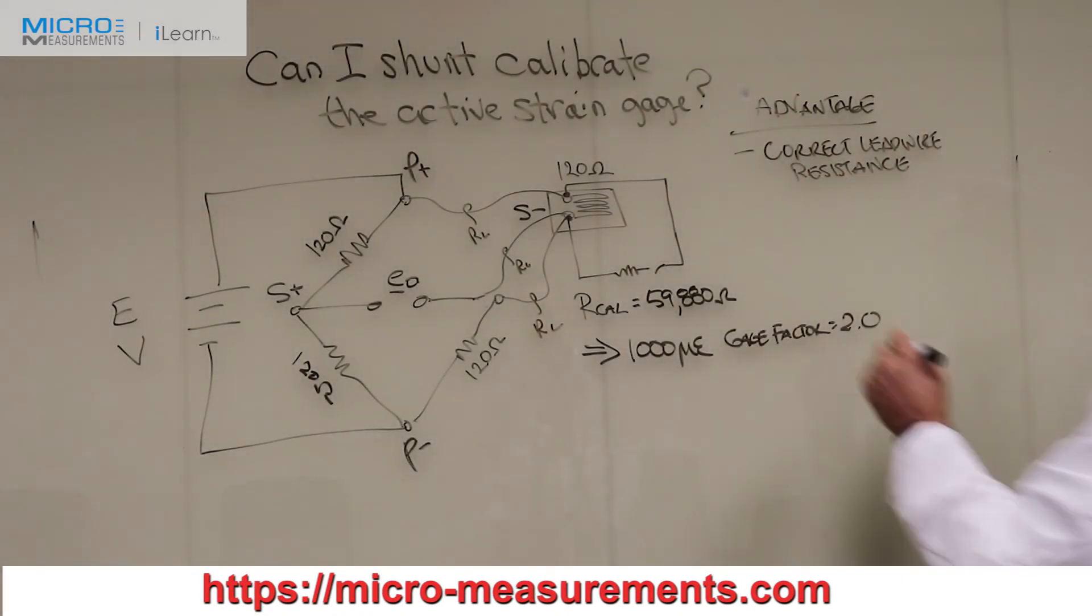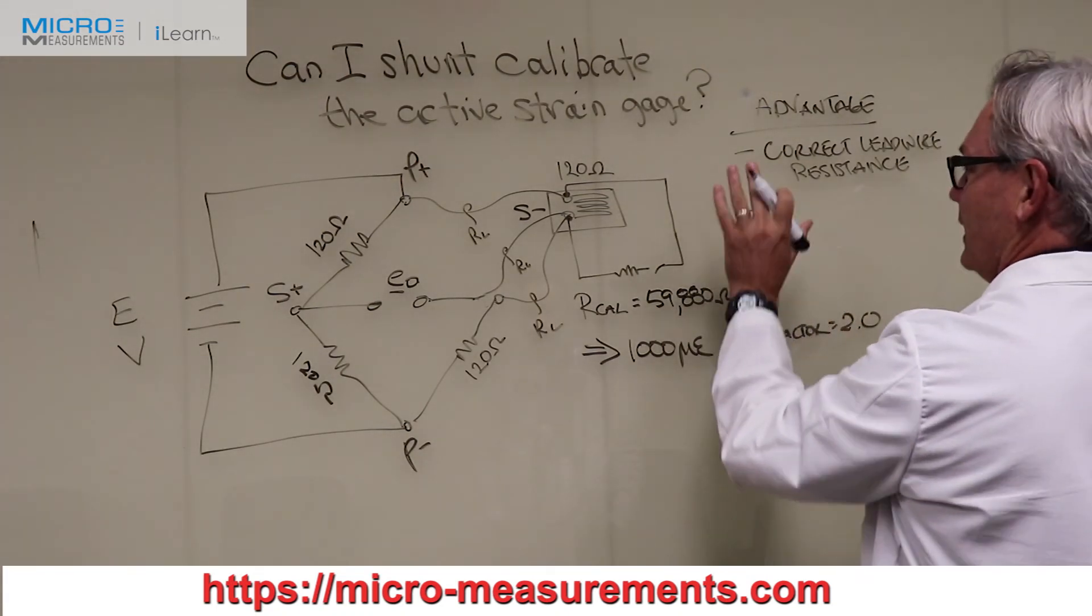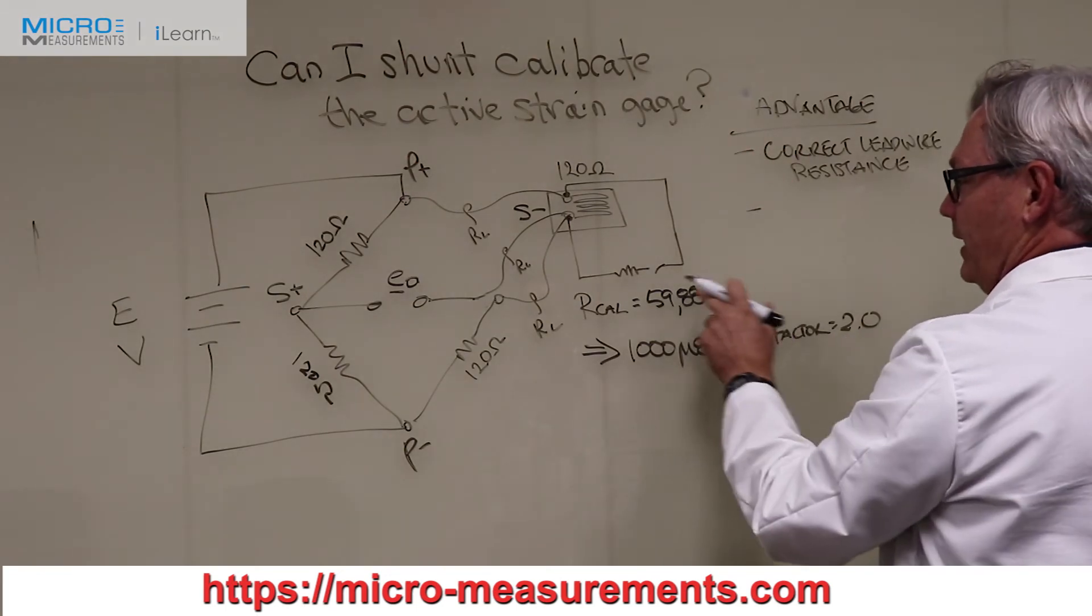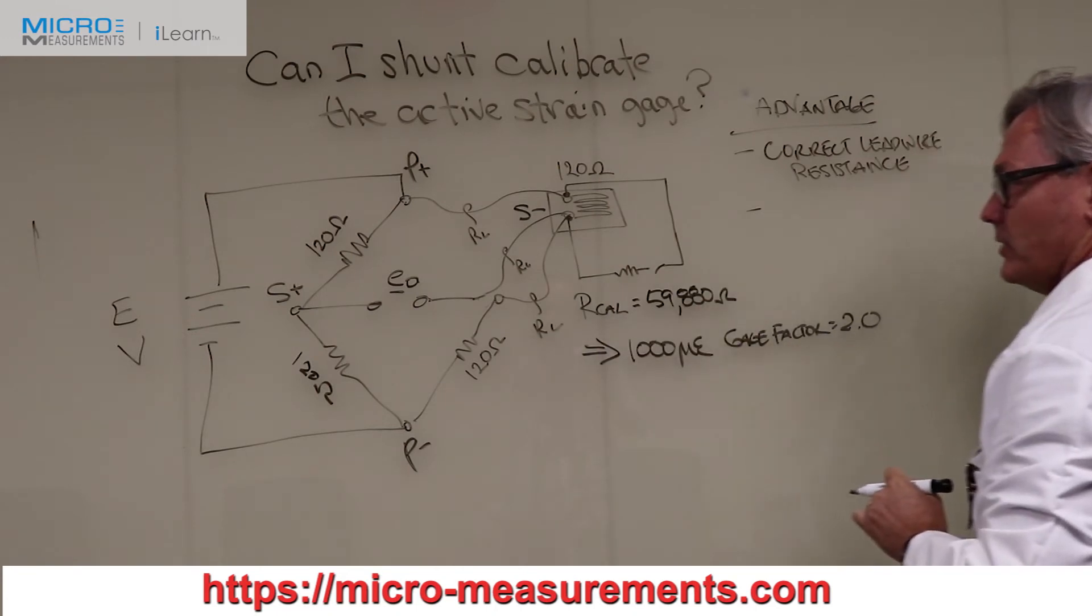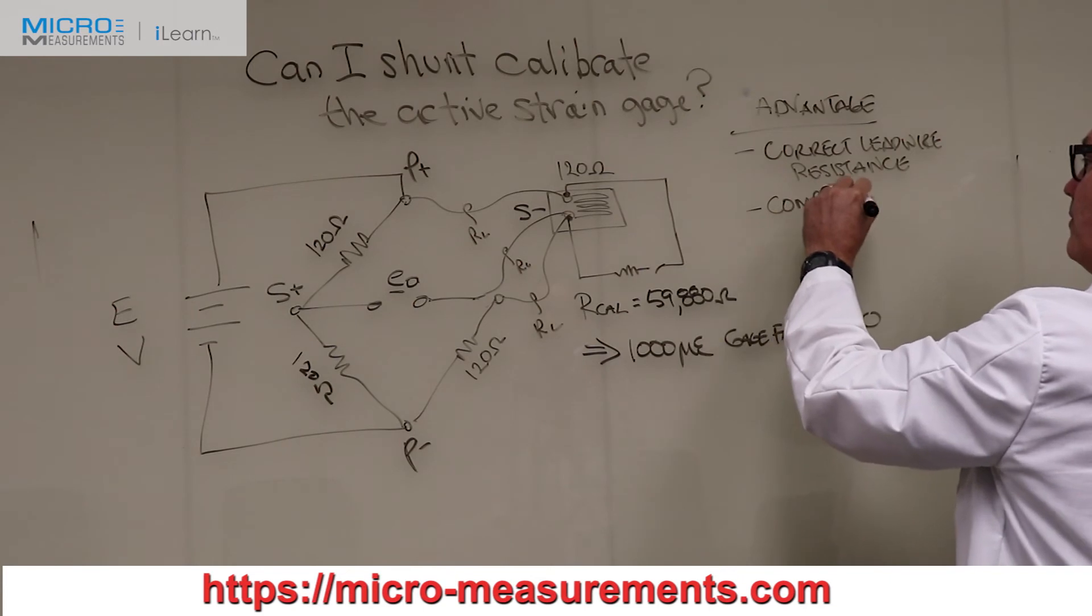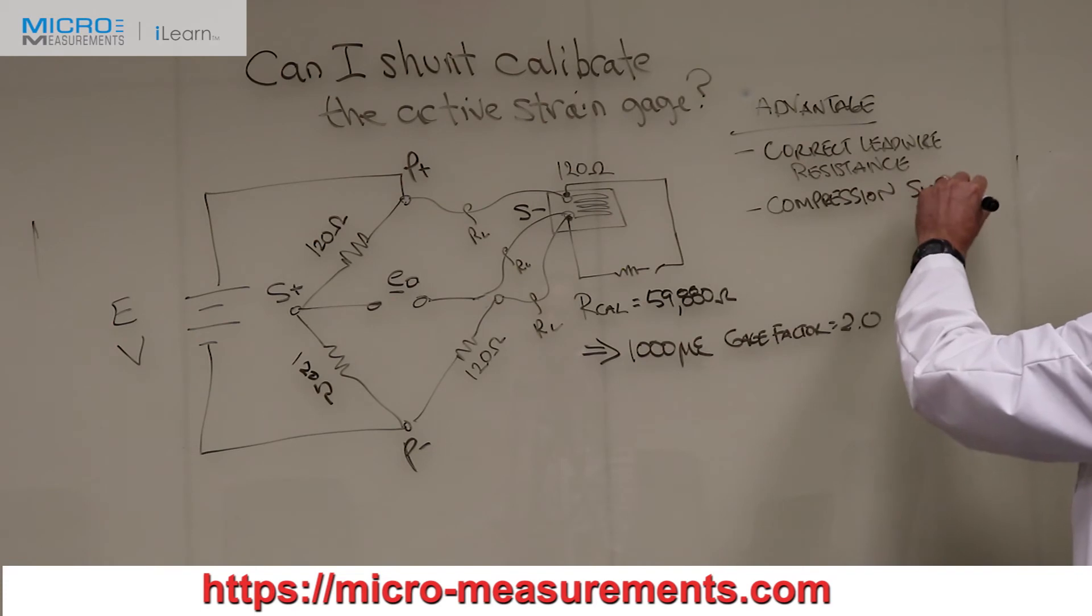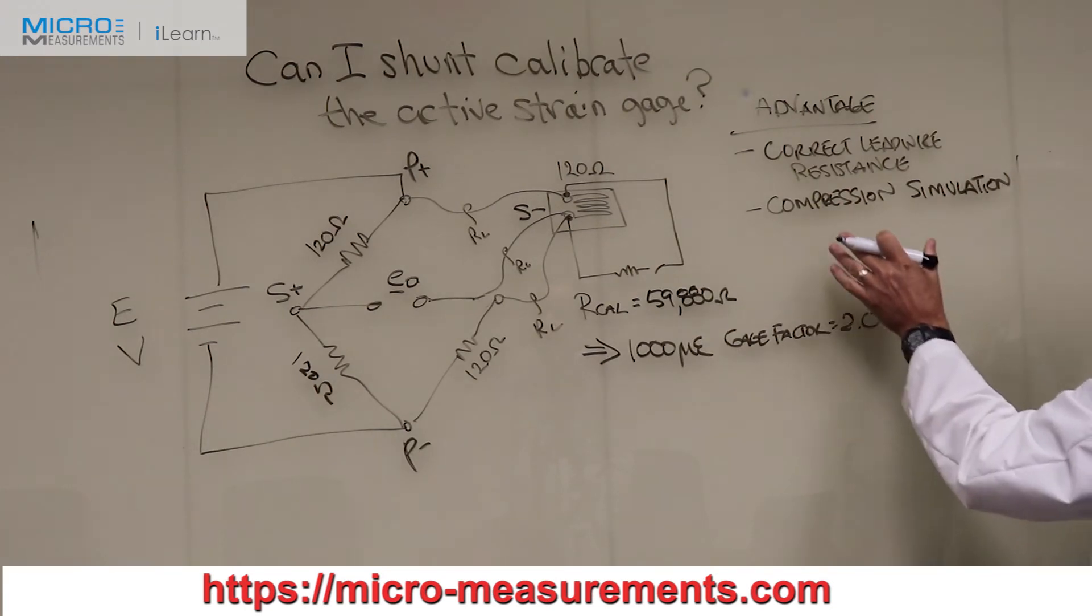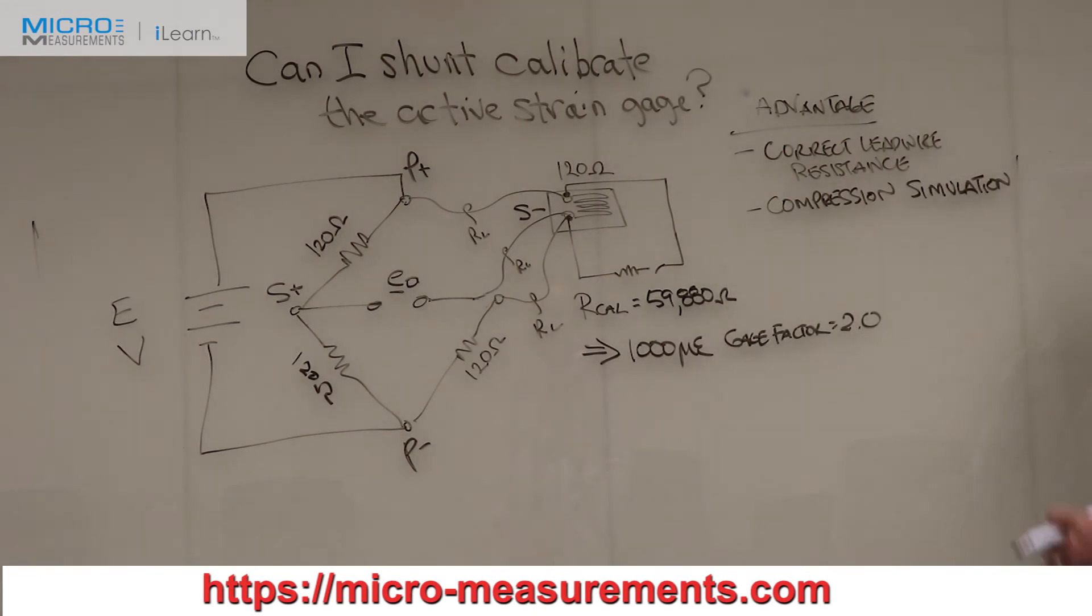Another advantage, and I'm not sure if you'd consider it an advantage or disadvantage, but I'll call it an advantage. Another advantage is that when you shunt this resistor parallel across this active strain gauge, is that it simulates compression. And if you're primarily testing in compression, then I would argue that that's a good thing. You've just simulated a compressive strain just like the strain gauge would see as it were active.